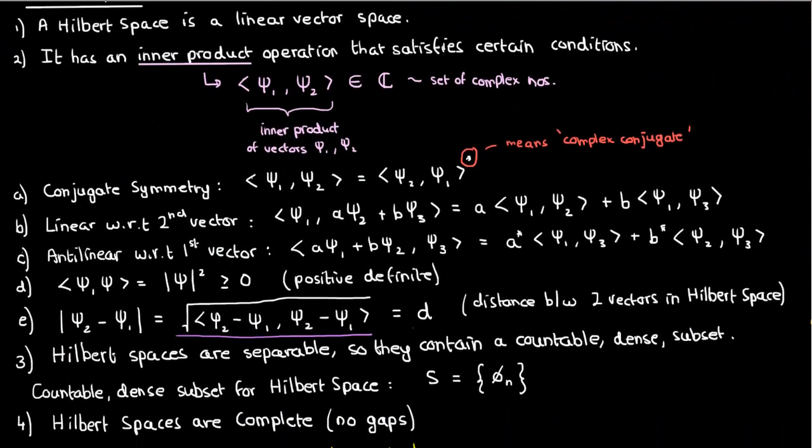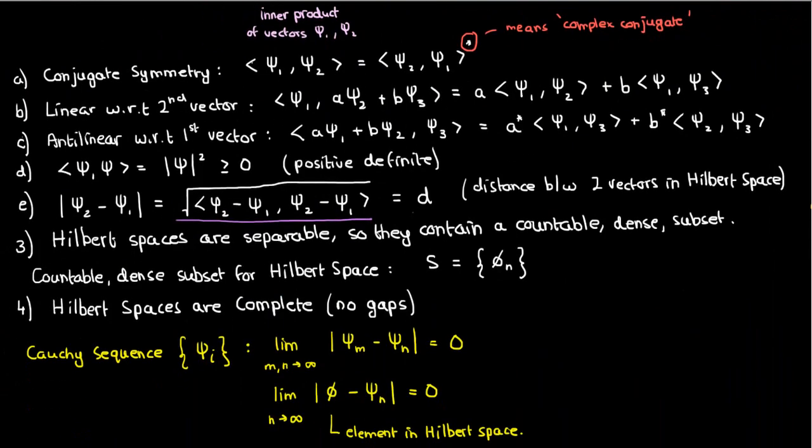So in the end, a Hilbert space is a set which satisfies all four of these properties: being a linear vector space, having a valid inner product, being separable, and being complete.